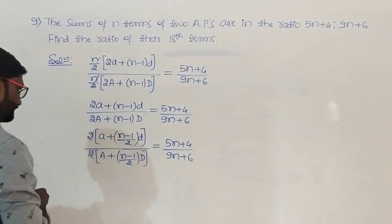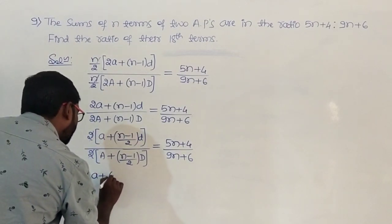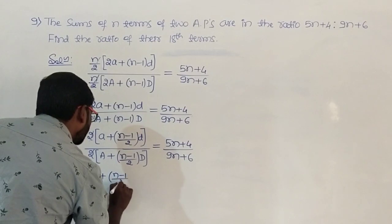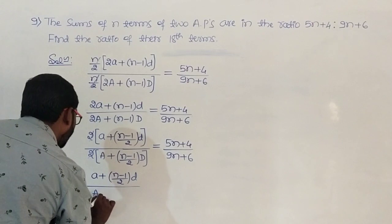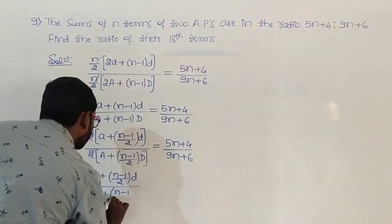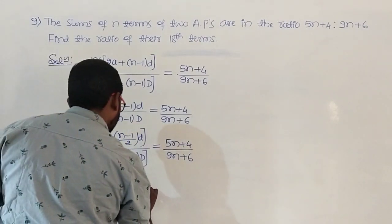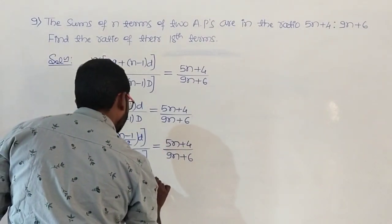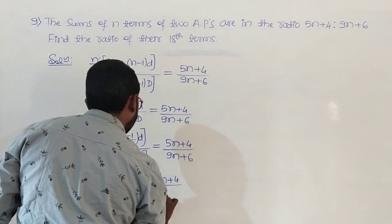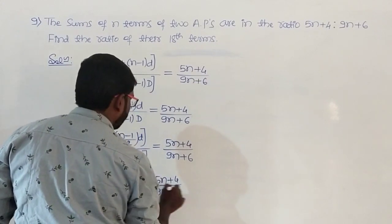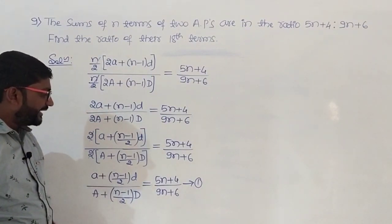So we have: a plus n minus 1 by 2 into d, divided by A plus n minus 1 by 2 into capital D, equals 5n plus 4 divided by 9n plus 6. Call this equation number 1. Now we need the ratio of the 18th term, so n minus 1 by 2 must equal 17.